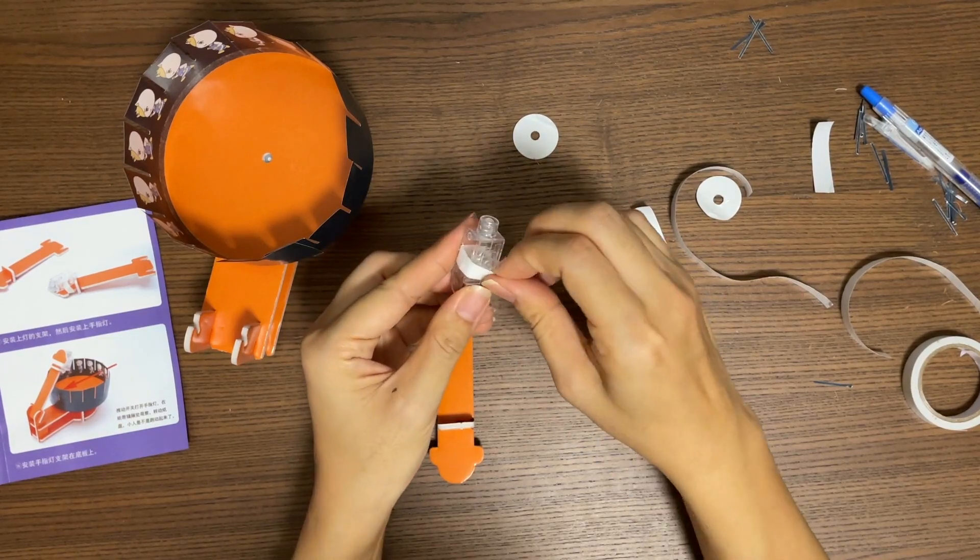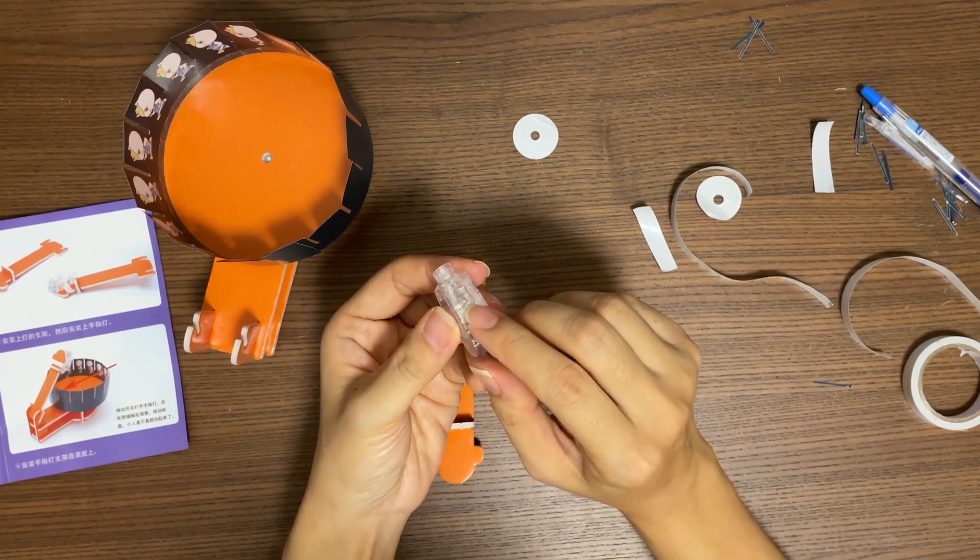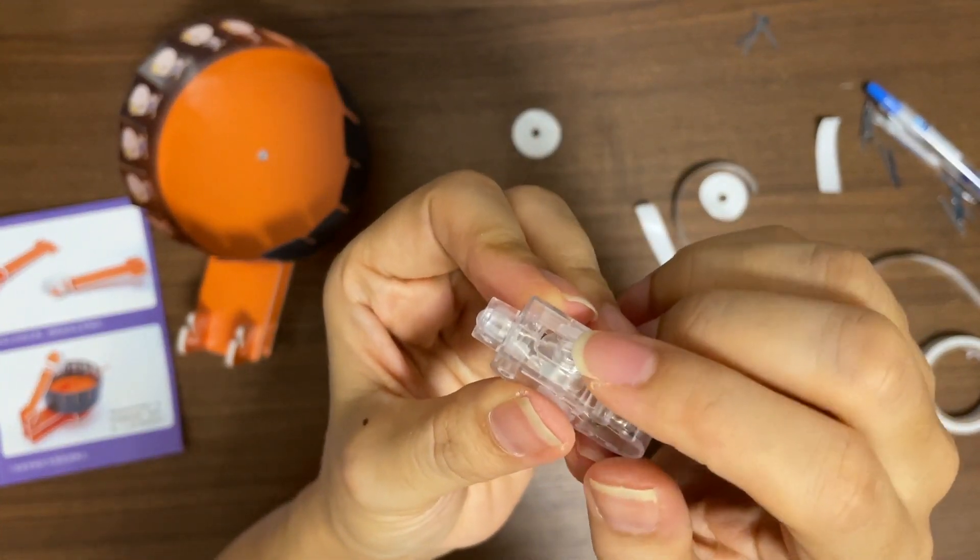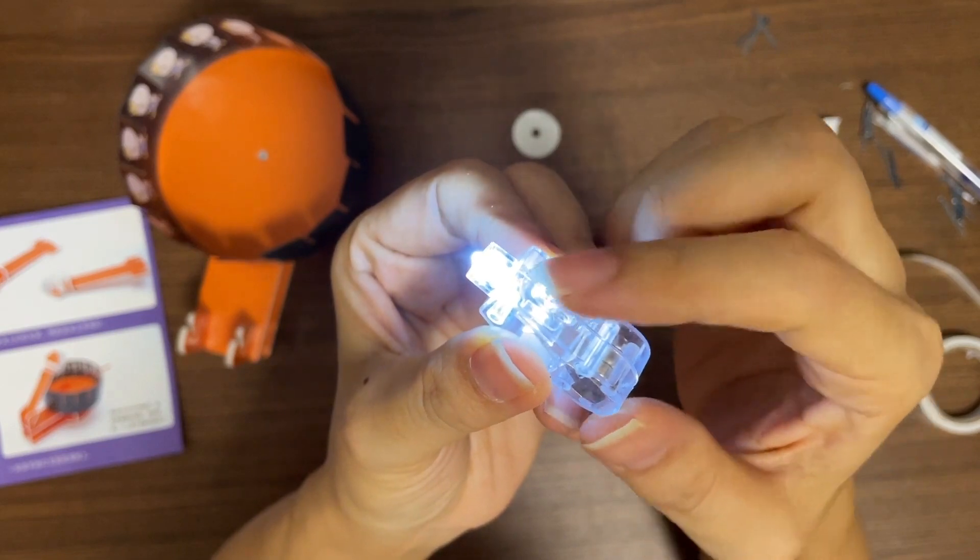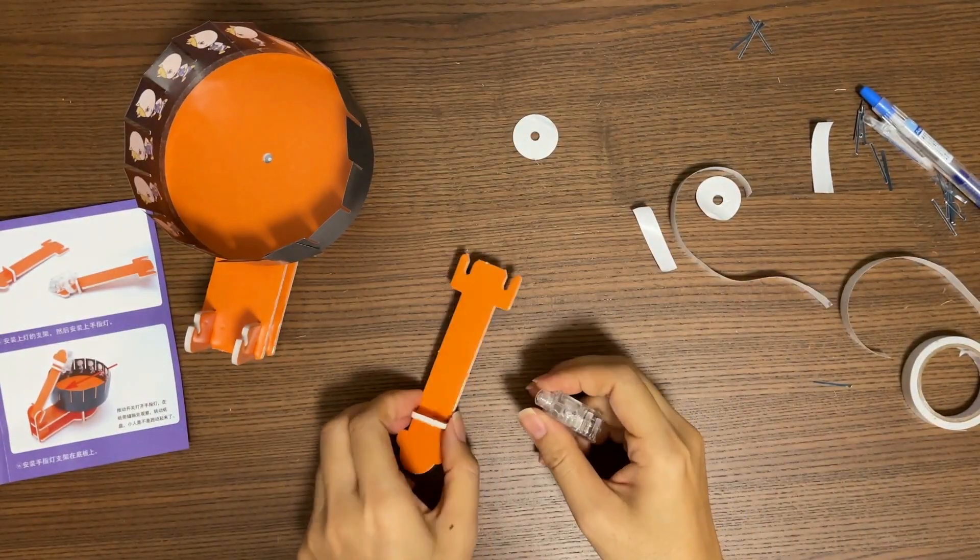Next we will take this finger light. Pull the rubber band to the other side. Push the button. Make sure the light is working. Then push it off.